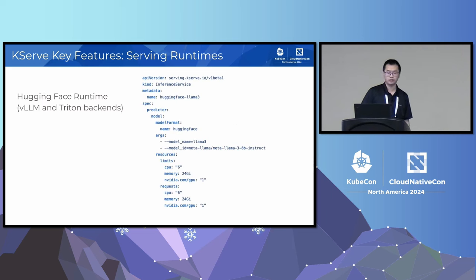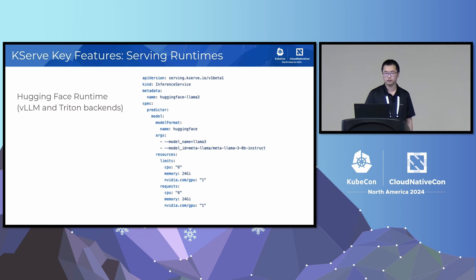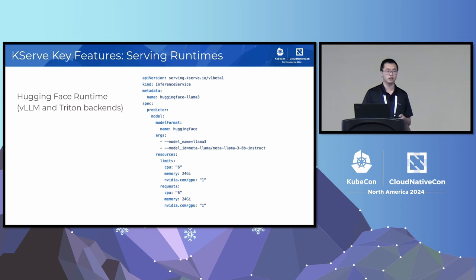Here's an example of using the Hugging Face runtime. By default it uses the vLLM backend, but you can also choose the Triton backend. All you need to do is specify the model format as Hugging Face, specify the computational resources and the path to your model, and you can quickly start serving models using the vLLM runtime.